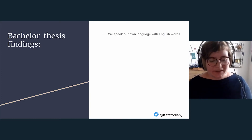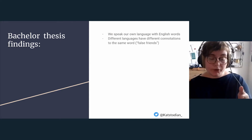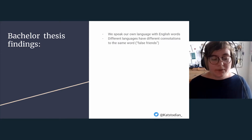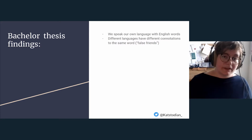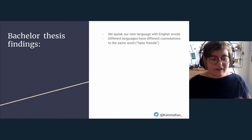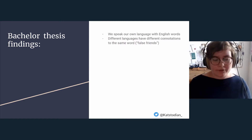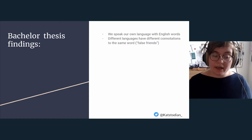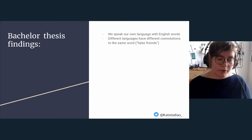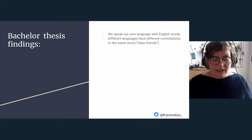This is important because different languages have different connotations to the same word — connotation meaning what the word means to you. The same word can technically have the same meaning in two languages but be connotated differently. This is called a false friend. For example, the word 'spar' exists in both Danish and English. In English, it has a slight adversarial quality — a sparring partner is someone you argue with. In Danish, a sparring partner is a positive thing: someone you use as a sounding board for your ideas.